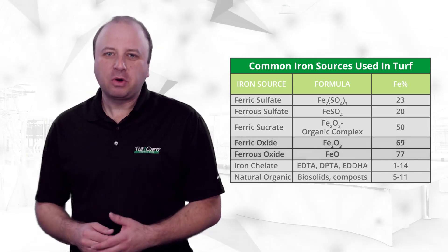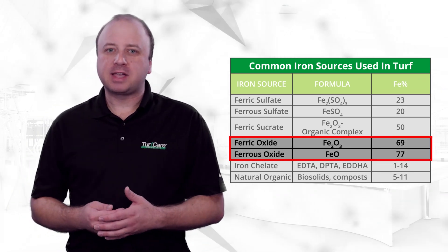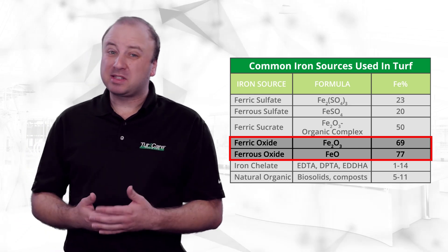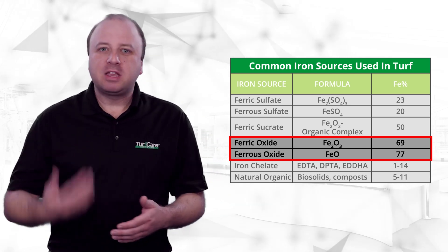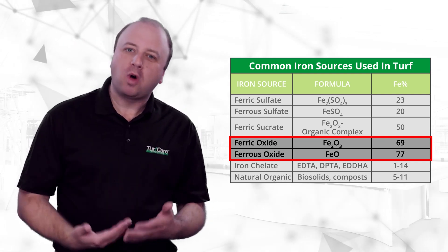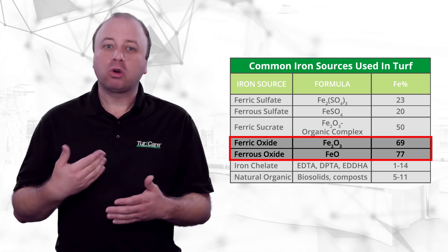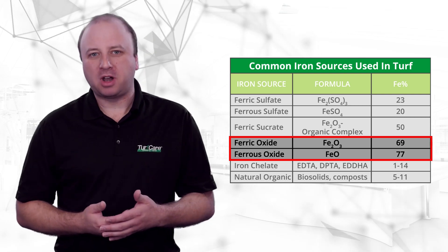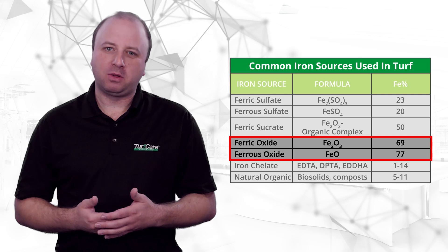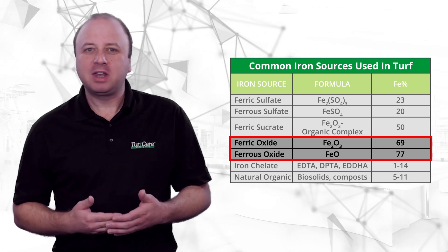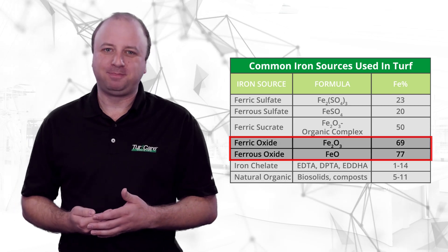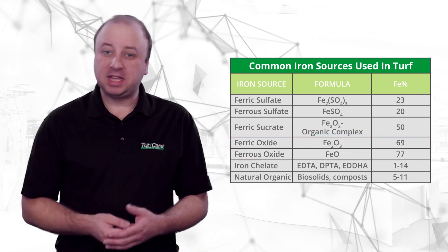Ferric and ferrous oxides have a much higher iron content — between 69 and 77 percent by weight. The advantage of these iron sources is they're fairly inexpensive. However, the drawback is they're just as or less soluble than iron sucrate, because most oxides have little or no solubility in water. So if you're looking for a quick green up, iron oxides probably aren't your best bet.